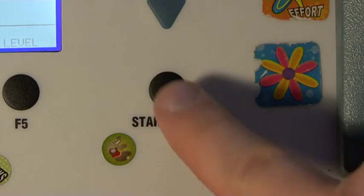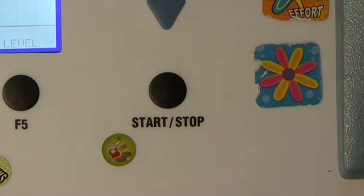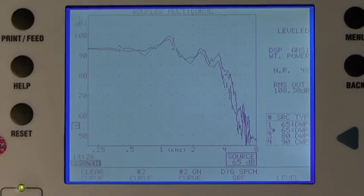Press start-stop to freeze the curve. You should have matched the level and shape of the hearing aid to the personal FM system.